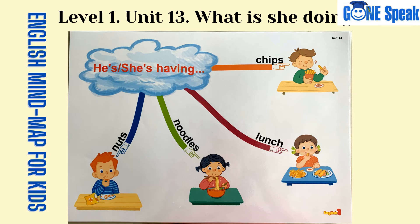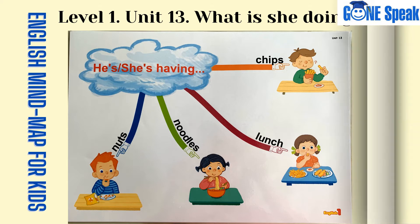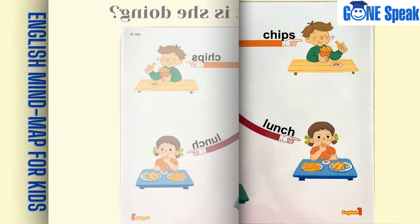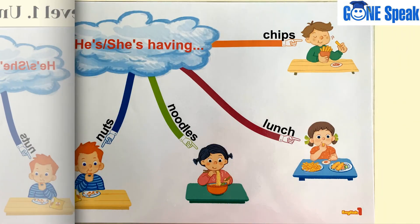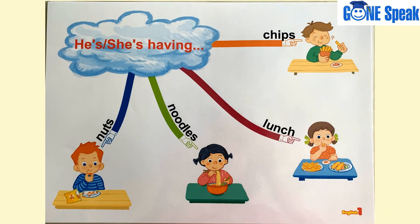Welcome to Gonspeak. This is a program of English Mind Map for Kids. Level 1, Unit 13. What is she doing? Let's practice sentences below.